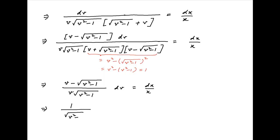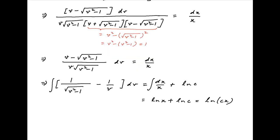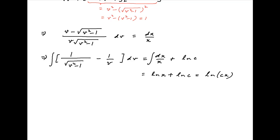This can be written as 1 upon the square root of v squared minus 1 minus 1 upon v, dv equals dx upon x. Integrating both sides and introducing a constant of integration ln(c) on the right-hand side, the right-hand side becomes ln(x) plus ln(c), which equals ln(cx).